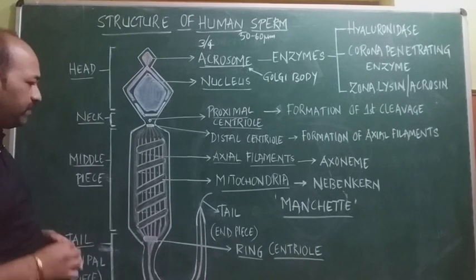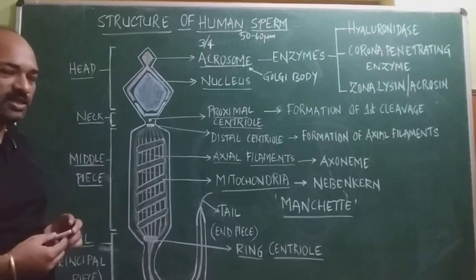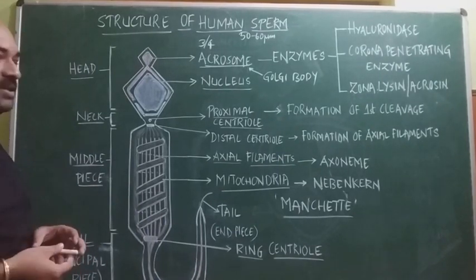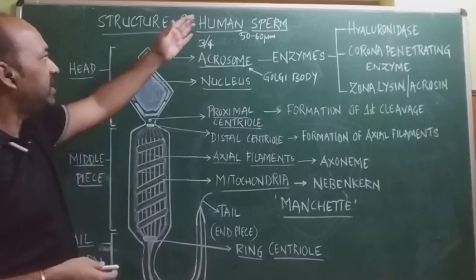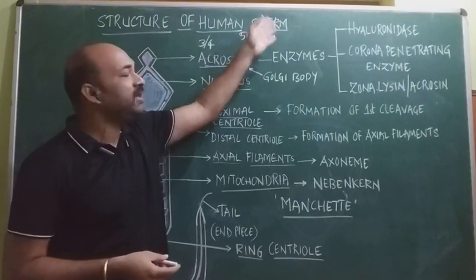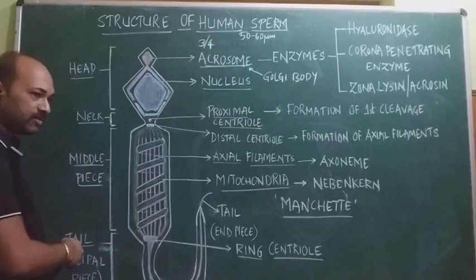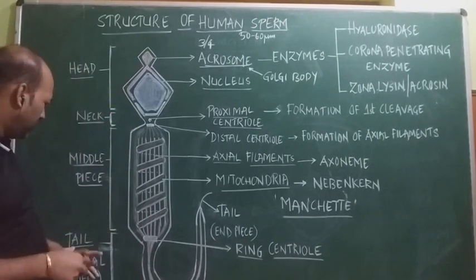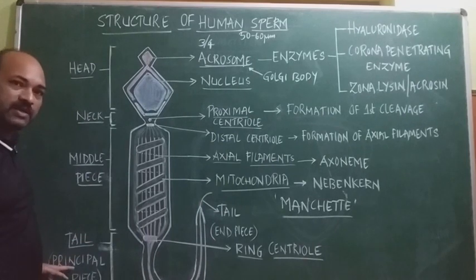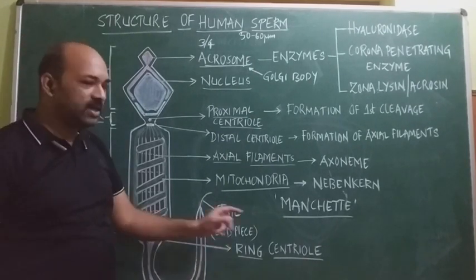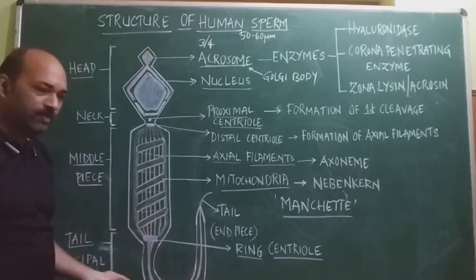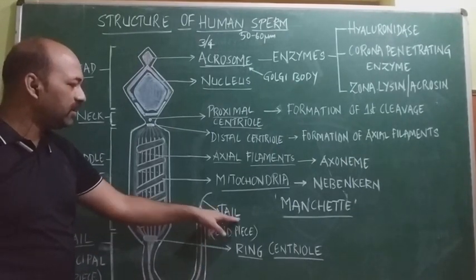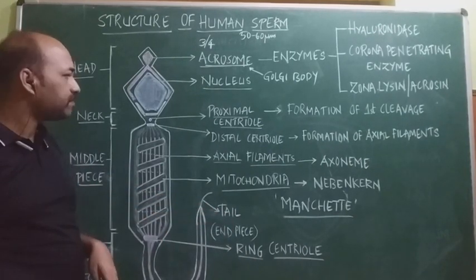The last part is the tail. The main function of the tail is swimming — it consists of flagella, and when the flagella continuously beat, they facilitate the sperm to move, giving the sperm its motility. The tail is the longest portion of the sperm and is divided into two parts: the principal piece, which is covered by a thin membrane, and the end piece, which is without any membrane and is completely naked.